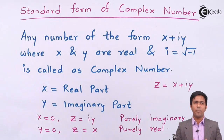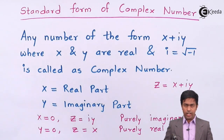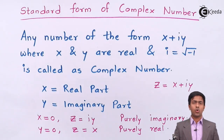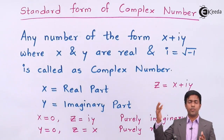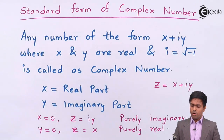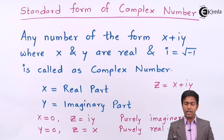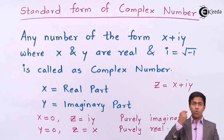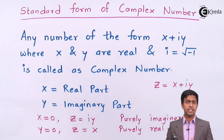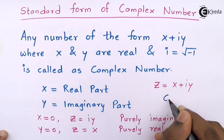We have seen the definition of a complex number, how to identify it, and what purely real and purely imaginary numbers are. Whenever you see z equal to x plus iy, it is a complex number. This form is also called the Cartesian form of a complex number. In the next videos we will see different forms — Cartesian, polar, and exponential. The form x plus iy is called the Cartesian form or the standard form, meaning it has exactly one real part and one imaginary part.